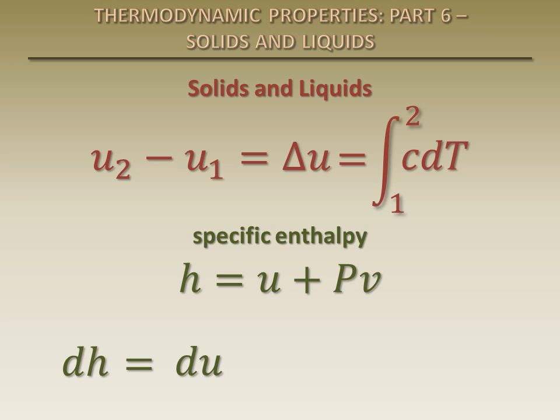We use the product rule on the PV term. For incompressible substances, the change in the specific volume, dV, is zero, so the last term in this equation goes away.